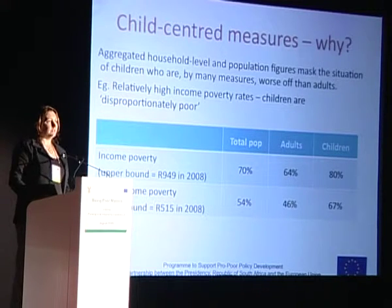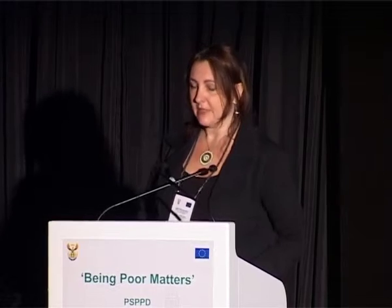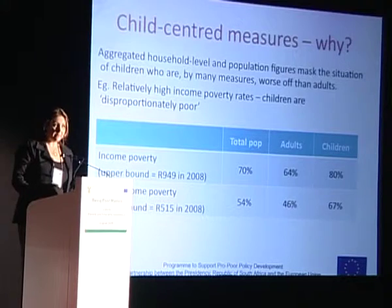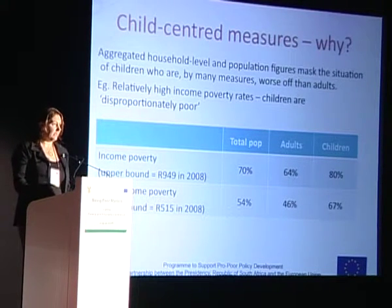Children across the world, and particularly in developing countries, carry a disproportionate burden of poverty. This is true in South Africa, and it can be illustrated by a simple numeric example. Here are two commonly used poverty lines. Looking at the lower line, which is very minimalist — just enough to meet basic food requirements — just over half the population, 54%, lives below this line. But if we compare poverty rates for adults and children using the same poverty line, 67% of children are defined as poor, compared with only 46% of adults.